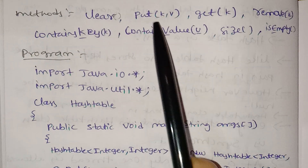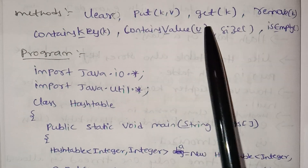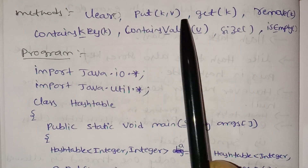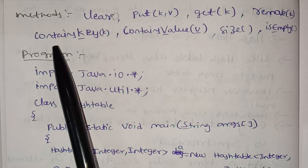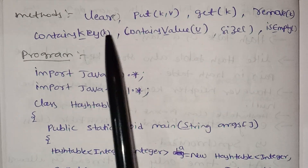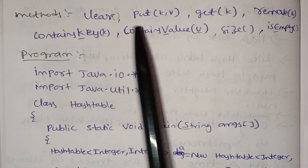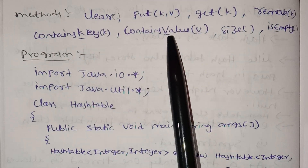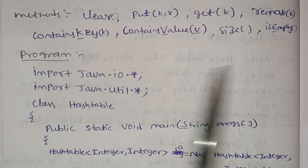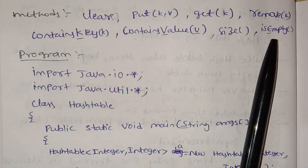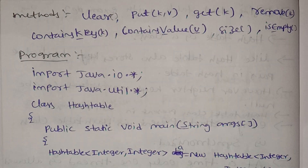Hashtable methods include: put(K, V), get(K), remove(K), containsKey(K), containsValue(V), and size / isEmpty. These are the main methods used in the program.